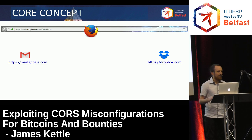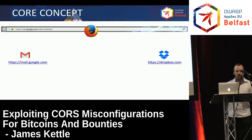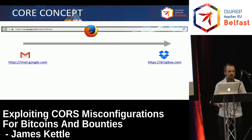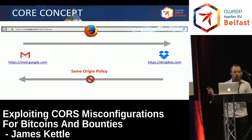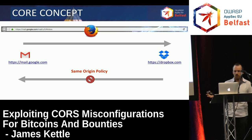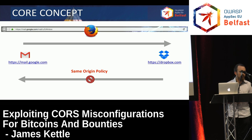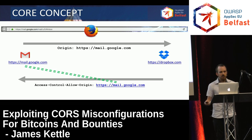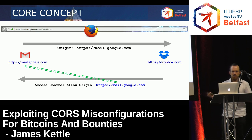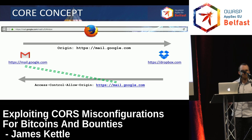CORS is about what a website can make your web browser do. Say that you own Gmail and you want to let users embed their Dropbox files. You can easily make the user's web browser send a request to Dropbox, and Dropbox will send the response, but the web browser won't let Gmail read the response from Dropbox, thanks to the same-origin policy, which underpins most web security. But say that Dropbox actually trusts Gmail — that's where cross-origin resource sharing comes in. They can specify an HTTP header which says they trust Gmail, and the web browser will compare the origin it's on — mail.google.com — with the one specified in this header, and if they match, it gives access to that content.